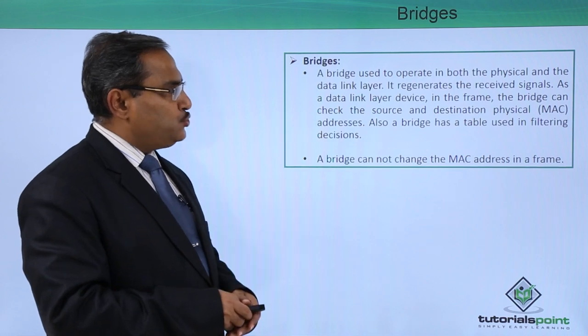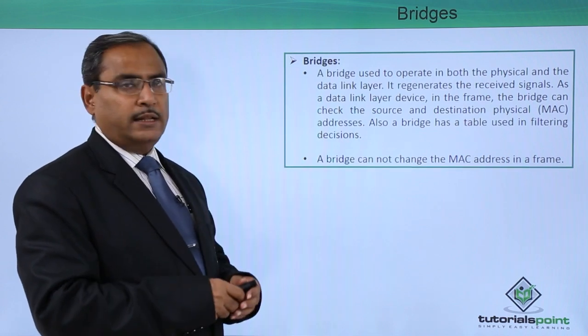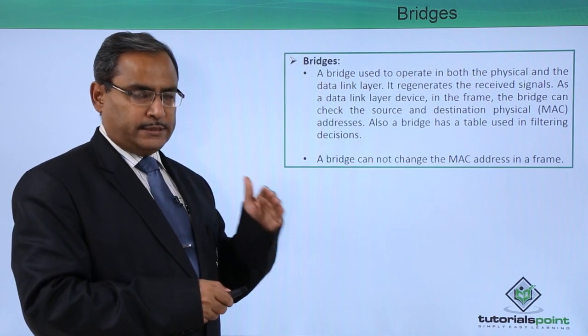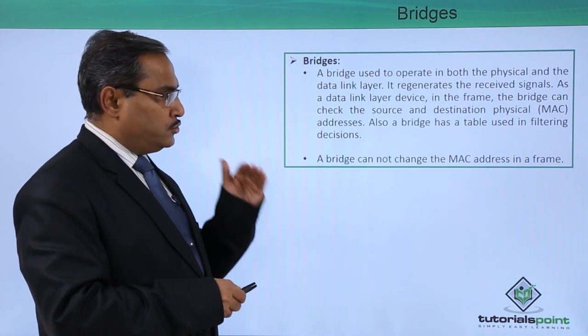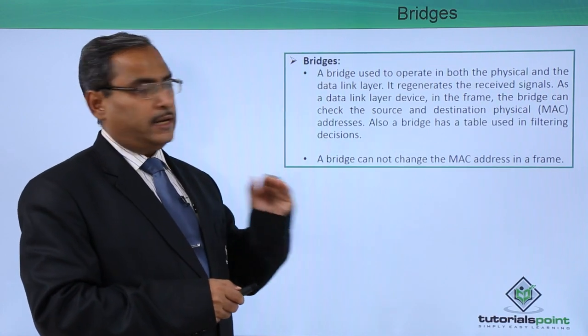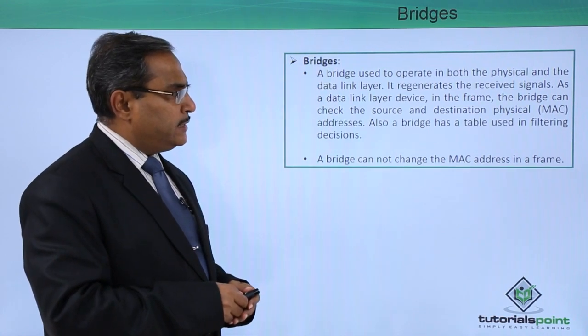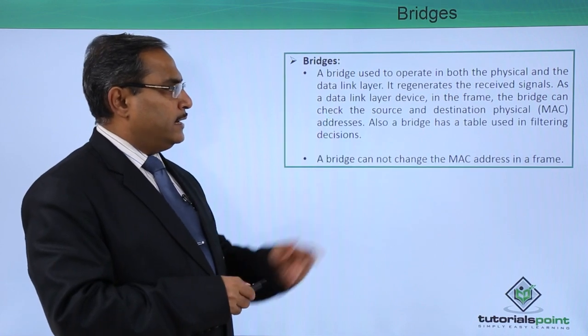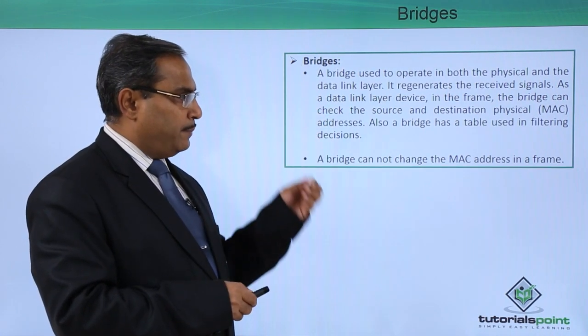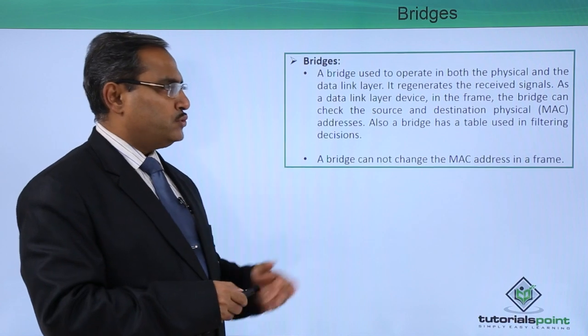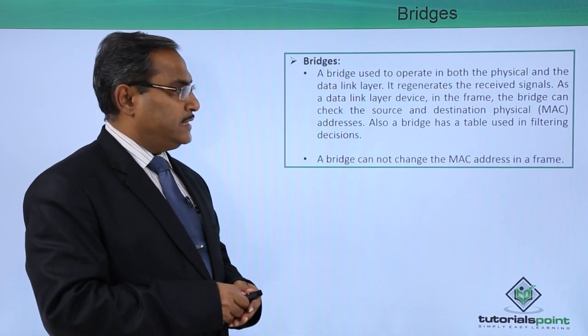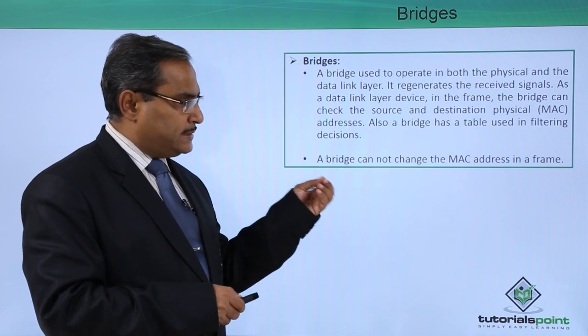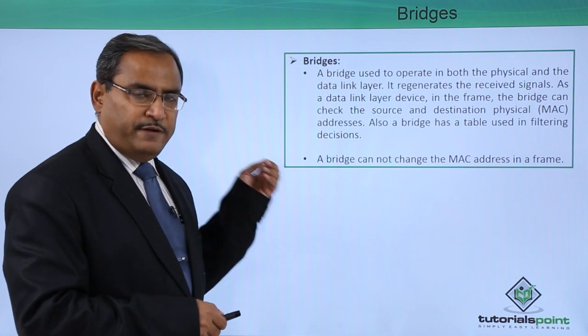A bridge is used to operate in both the physical and the data link layer. In the previous video, we have shown you that bridge operates up to the data link layer - physical layer as well as the data link layer. It regenerates the received signals, and as a data link layer device, the bridge can check the source and the destination physical addresses, that is the MAC addresses. Also, a bridge has a table used in filtering decisions.